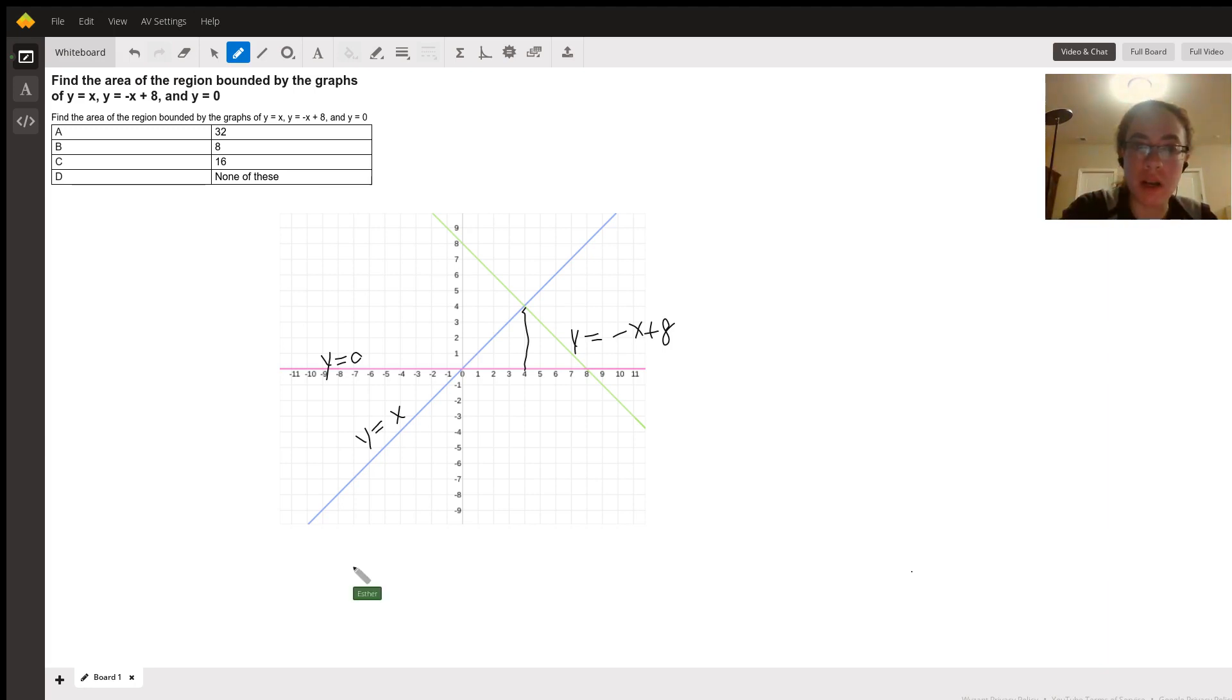So the total area, the left-hand contribution, is the integral from zero to four of x dx. And our right-hand contribution is the integral from four to eight of minus x plus eight dx.